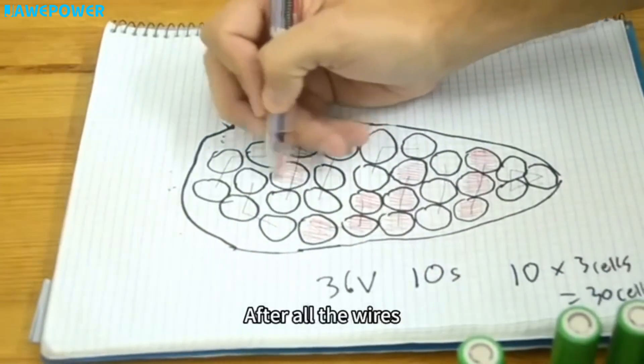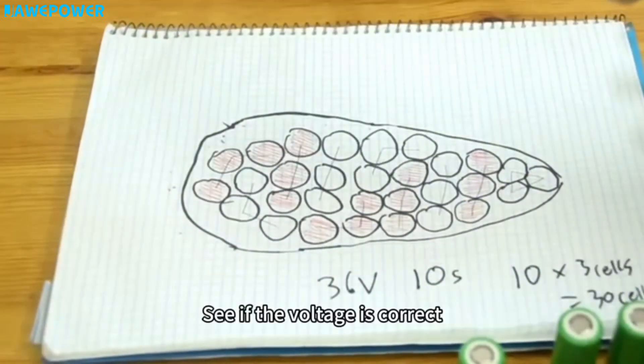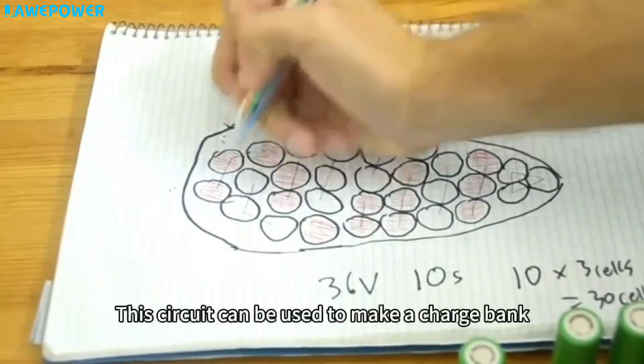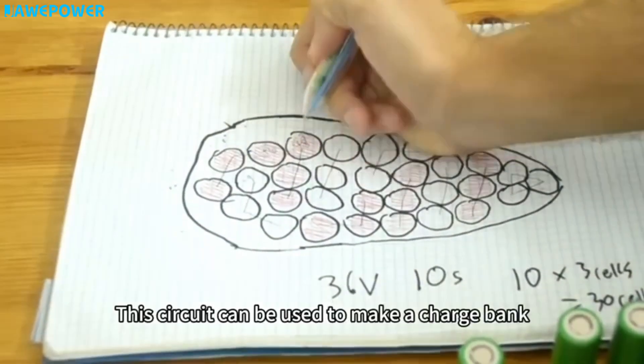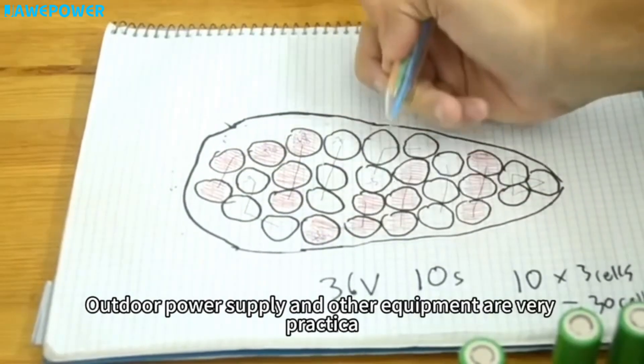After all the wires, we can use a universal meter to measure it. See if the voltage is correct. This circuit can be used to make a power bank, outdoor power supply, and other equipment. Very practical.